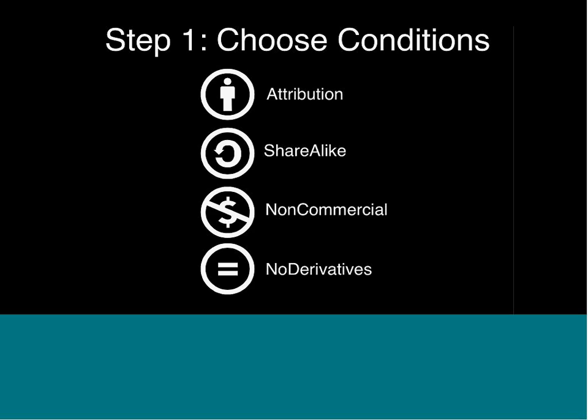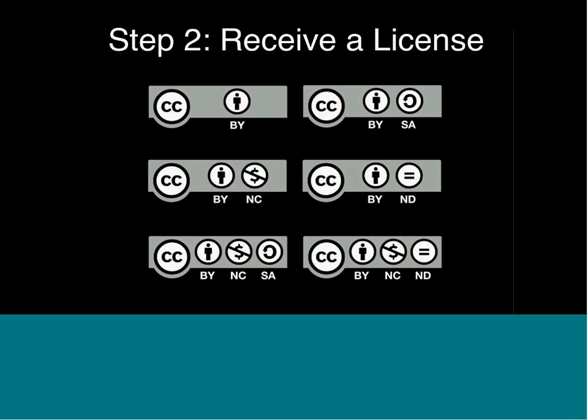ShareAlike says if you make a derivative work, if you modify my work, you must share your derivative under the same terms — which is what Wikipedia uses. Commercial says you can use my work but may not sell it or use it for commercial advantage. No Derivatives means you may use my work for free but may not modify it. In education, we generally don't use No Derivatives because educators like to modify things. When you remix these four conditions, you get one of six licenses — this is what people mean when they say CC BY or CC BY-SA.